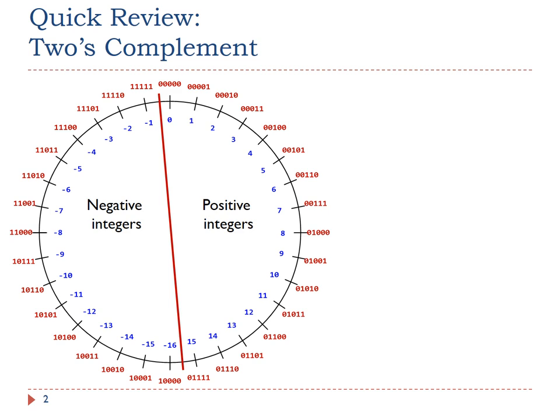Positive numbers and zero are simply represented as themselves. Negative numbers are represented in this way: invert every bit of its positive equivalent, and then add one.